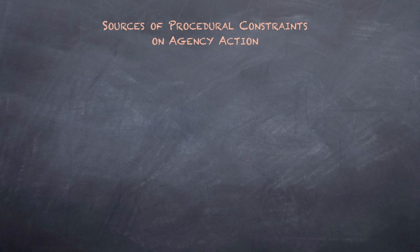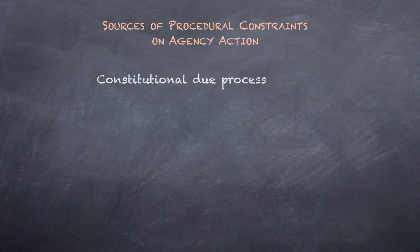Last time we looked at the federal Constitution's due process clauses as sources of procedural constraints on agency action. Now we widen our survey and take into view other, lesser sources. By lesser I mean that constraints defined by these non-constitutional sources can be tightened or relaxed as Congress sees fit.